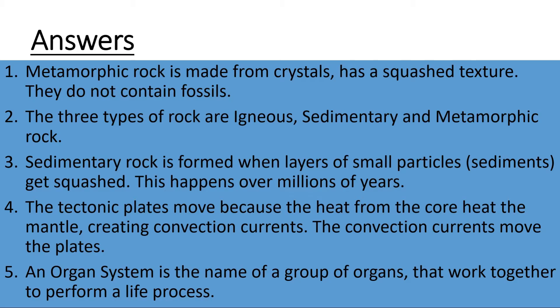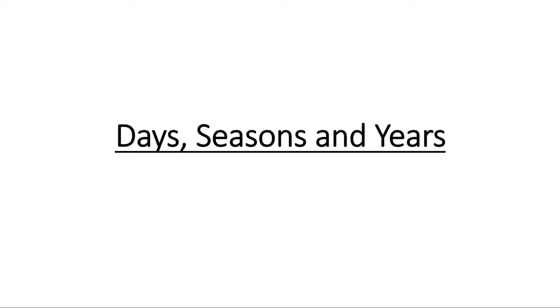Question 5. This was on our cells work, when we're looking at cells and tissues. An organ system is the name of a group of organs that work together to perform a life process. This lesson is on days, seasons, and years.